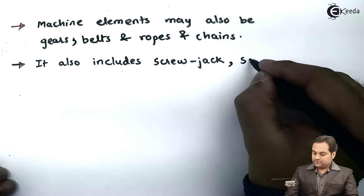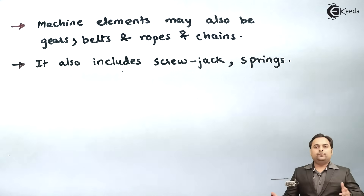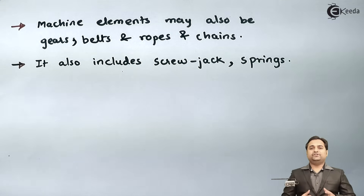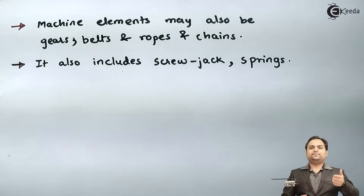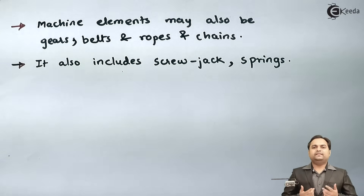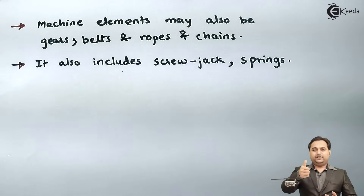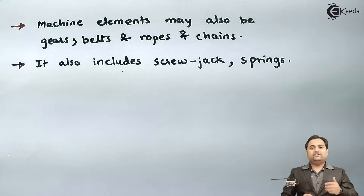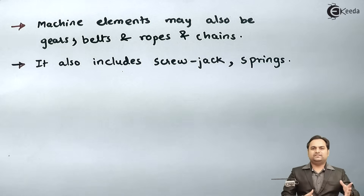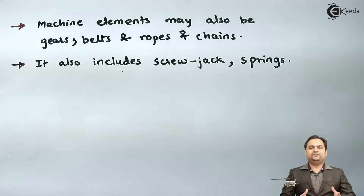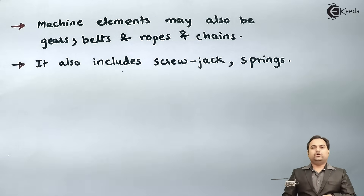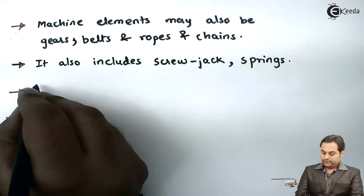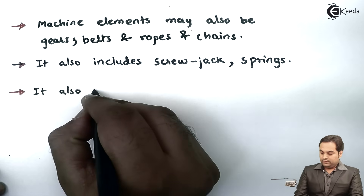After screw jack, even springs are designed with the knowledge of machine design. We see springs in day-to-day applications — for example, the spring of a ballpoint pen with a push button, springs in watches, and springs in the suspension of bikes and cars and other vehicles. All these springs are designed with the knowledge of machine design.